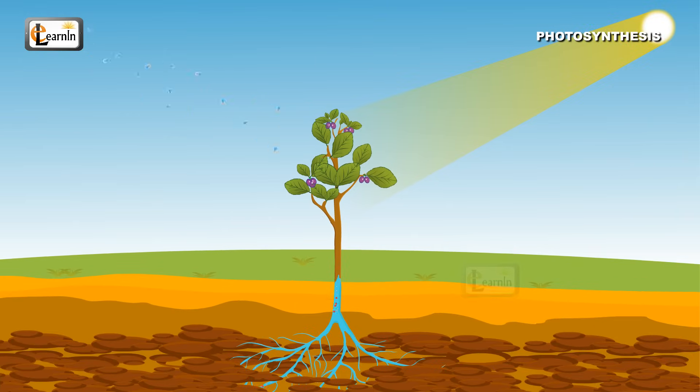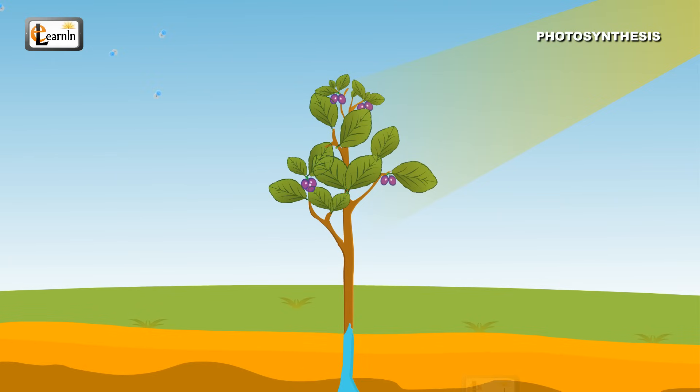All of these factors, including air, water, carbon dioxide, and sunlight, together help plants churn out their own food.